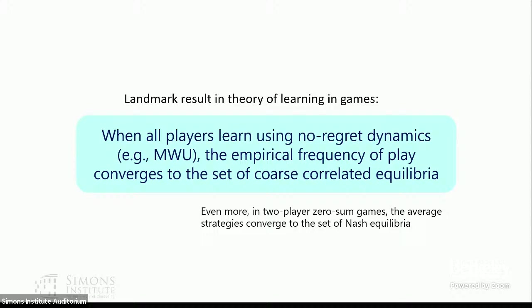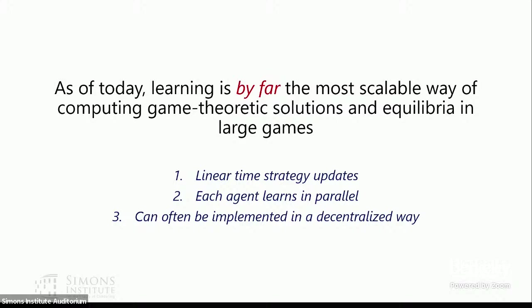For two-player zero-sum games in particular, you can get even stronger results — the average strategies converge to the set of Nash equilibria. As of today, this learning-based approach is by far the most scalable way of computing game-theoretic solutions in large games. These dynamics have linear-time strategy updates, every agent learns in parallel, and in many cases you can learn by only looking at your own utility in an uncoupled way.